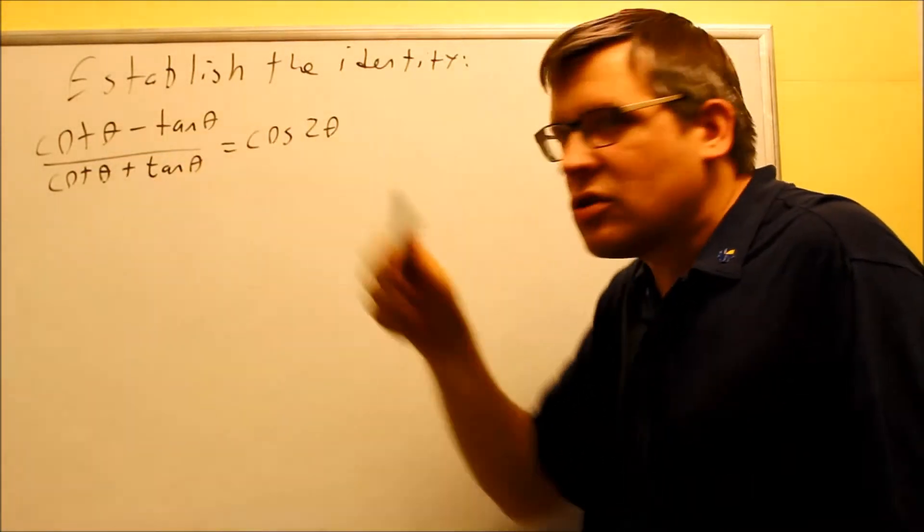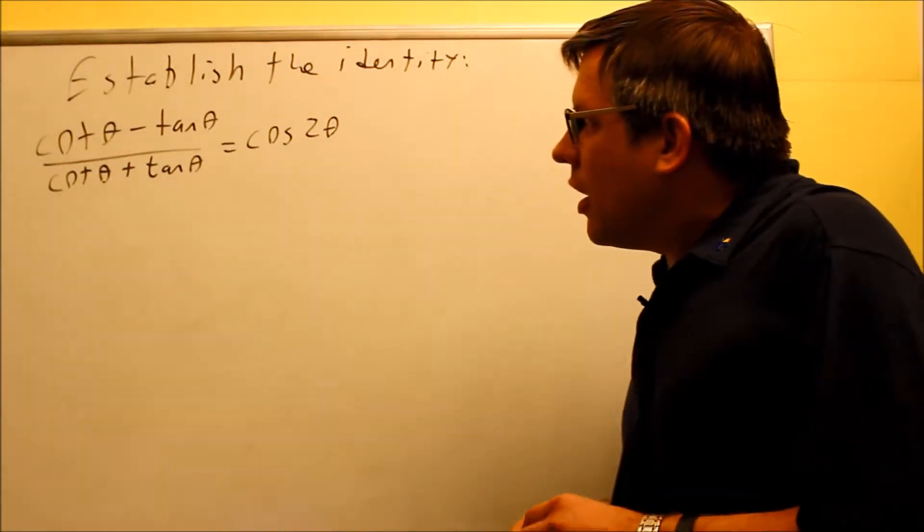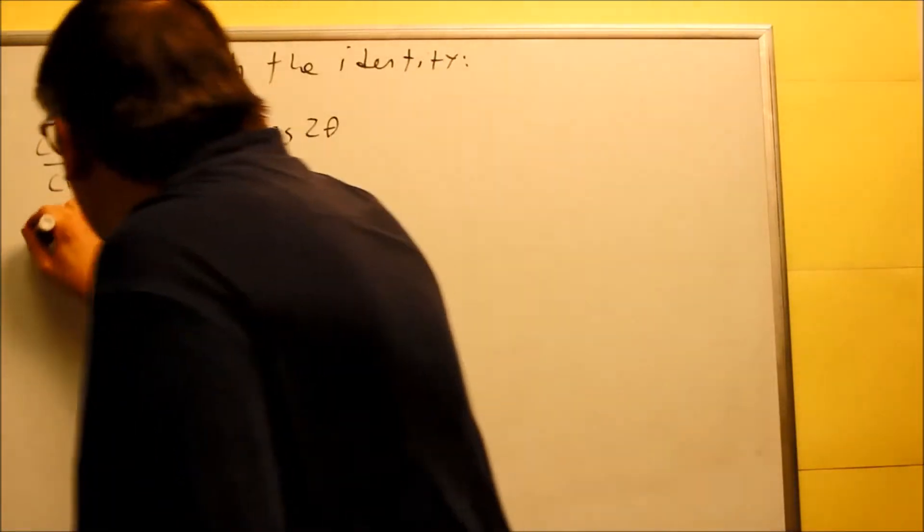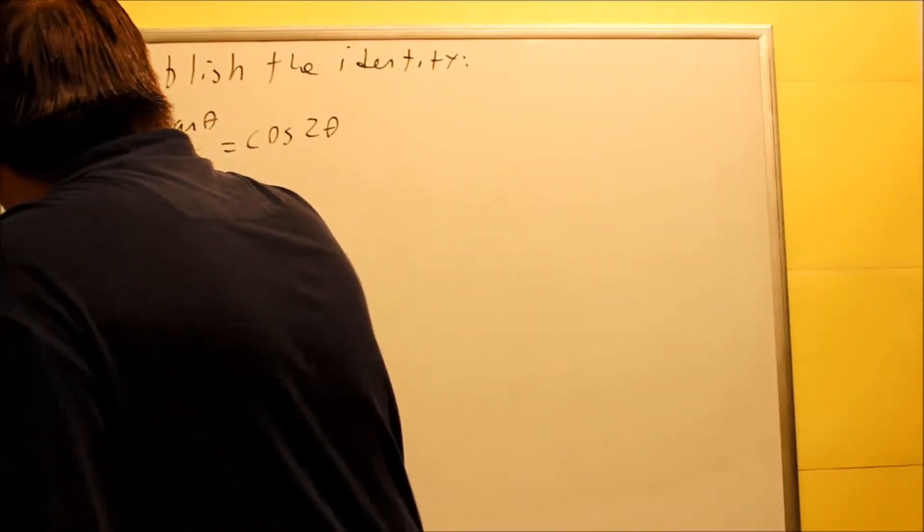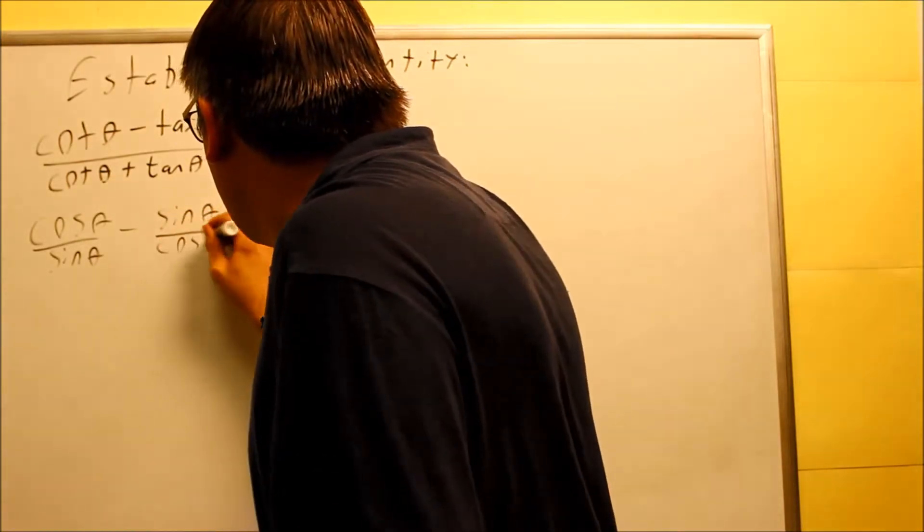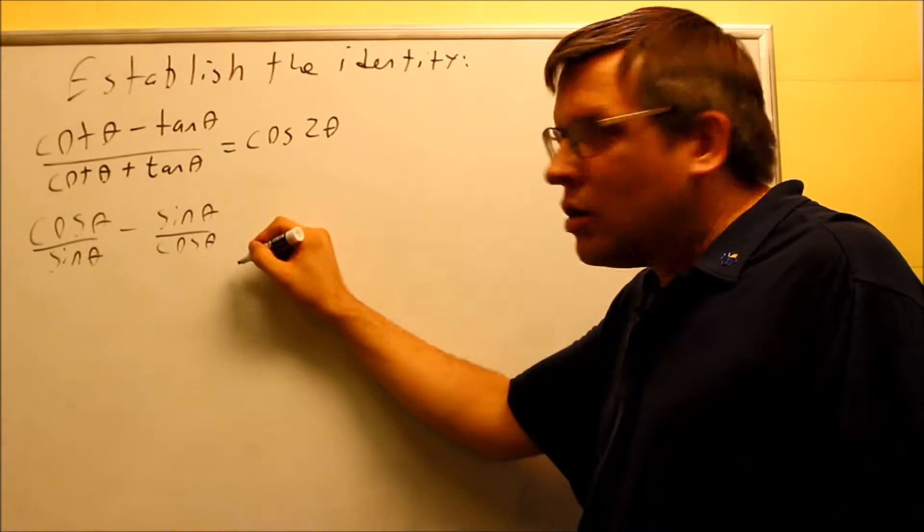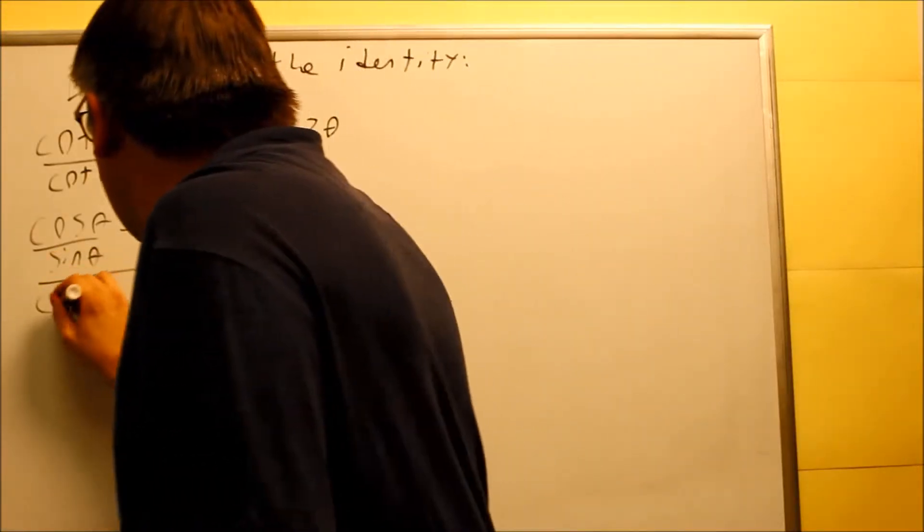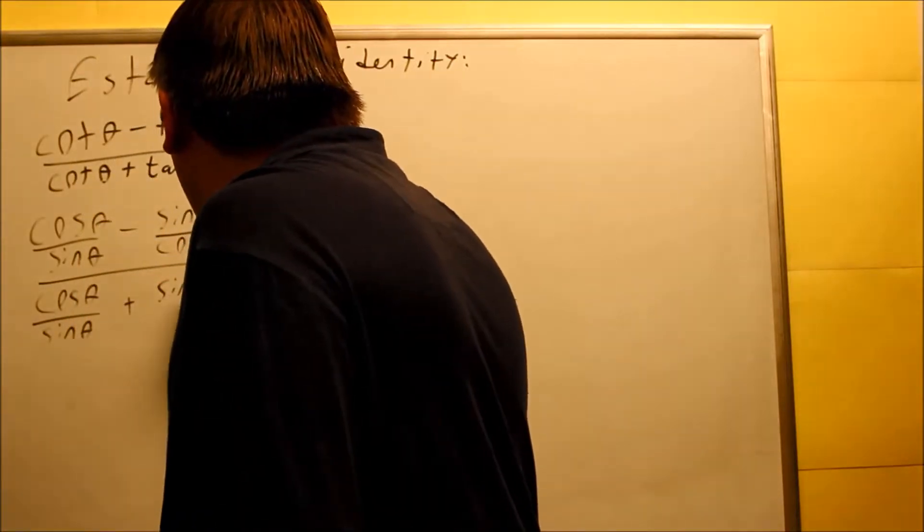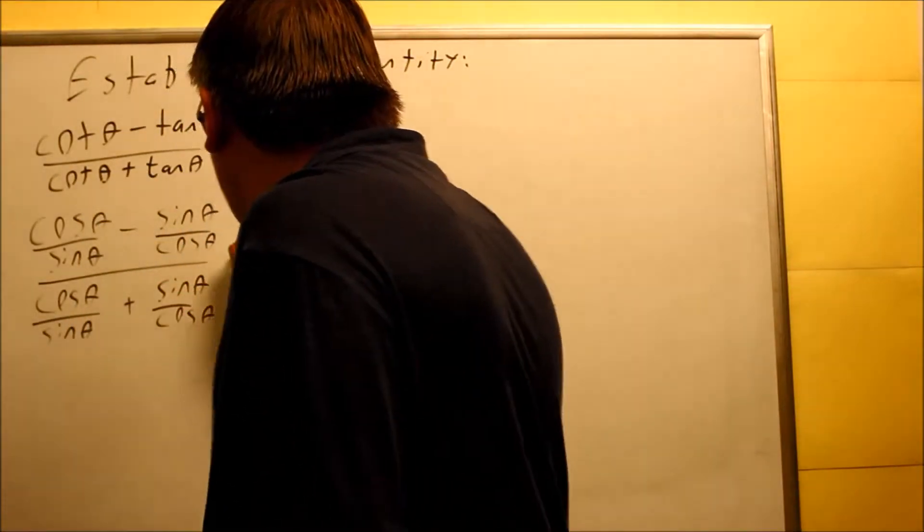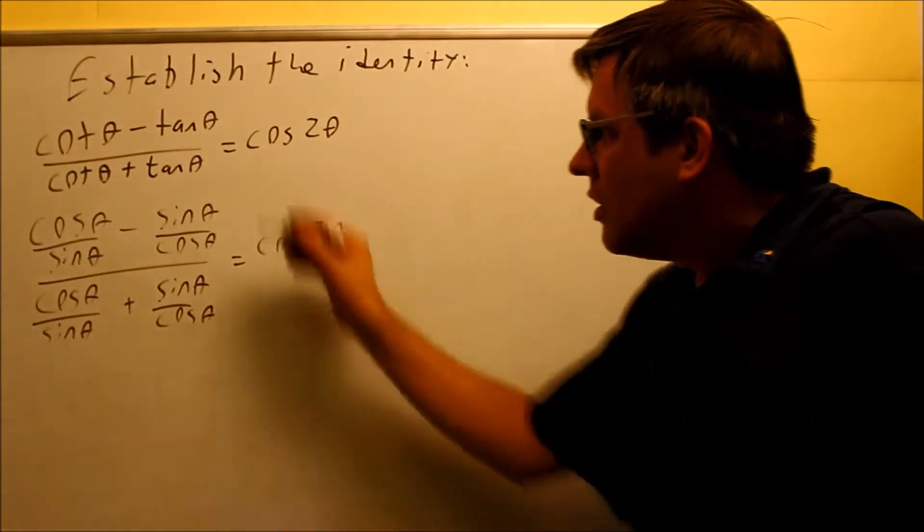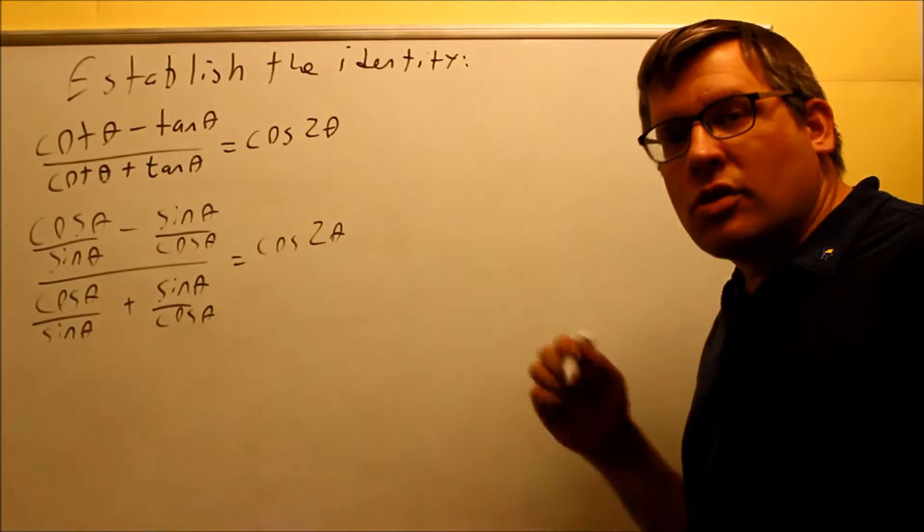So I'm going to change all these into sines and cosines. The identity for cotangent would be cosine over sine, so I'm going to do cosine θ over sine θ, and then for tangent, tangent identity would be sine θ over cosine θ. I'm going to do the same thing on the bottom, cosine over sine, and then sine over cosine. So everything so far, I'm just putting in identities for both of those. I've changed everything all into sines and cosines.